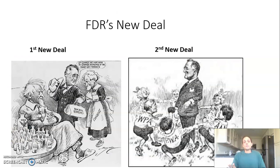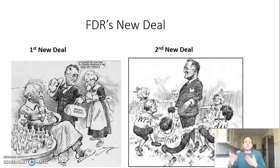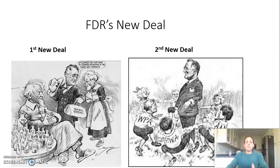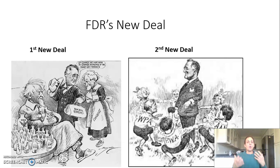FDR is going to have two major New Deals. The First New Deal runs from 1933 to 1935, and the Second New Deal spans from his first term into his second term, 1936 to 1938. All of his programs combined are known as the New Deal — all the different things he comes up with to try and stem the tide of the Great Depression.